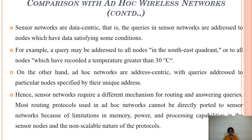Data centric means queries in sensor networks are addressed to nodes which have data satisfying certain conditions, whereas address centric means queries are addressed to particular nodes specified by unique addresses. For example, a query may be addressed to all nodes in the southeast quadrant or to all nodes which have recorded a temperature greater than 30 degrees Celsius.